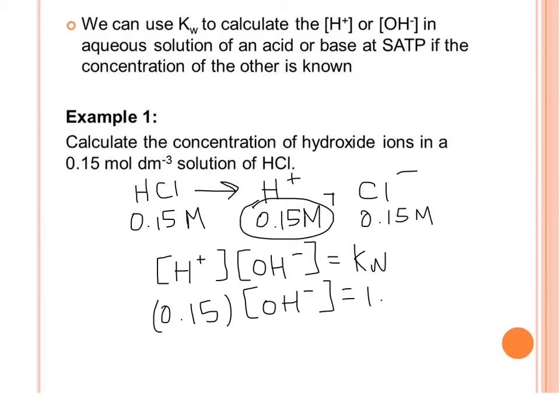We plug in 1.0 × 10⁻¹⁴ for Kw. If we solve this, it gives us an OH⁻ concentration of 6.7 × 10⁻¹⁴.